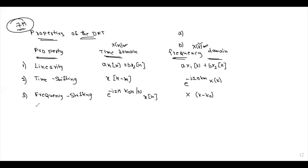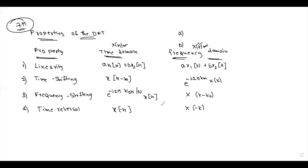The next property is the Time Reversal Property. In the time domain: x(-n). In the frequency domain: X(-k). This is the time reversal property.